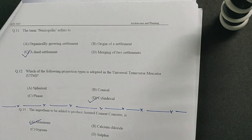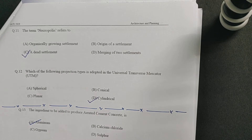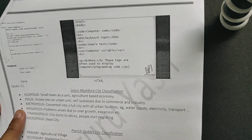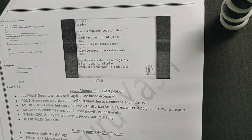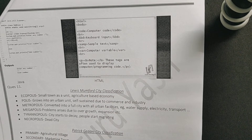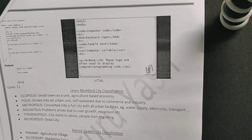Question number 11: the term 'necropolis' refers to which of the following? The term necropolis was given by Lewis Mumford in his city classification theory. He classified the city into five evolution stages. The first is ecropolis, which is a small town as a unit — a city at a very grassroot level, like a village in our context, and its base economy is agriculture.